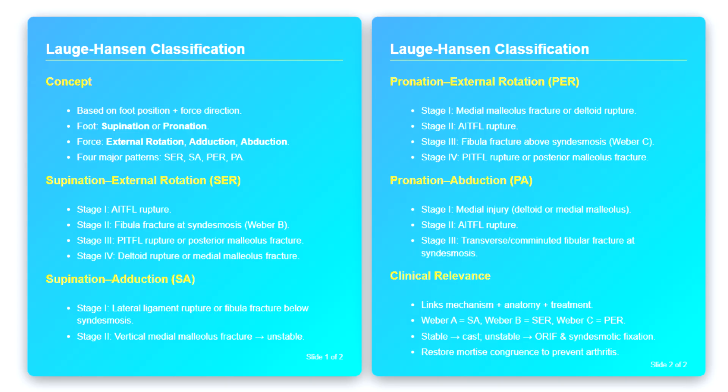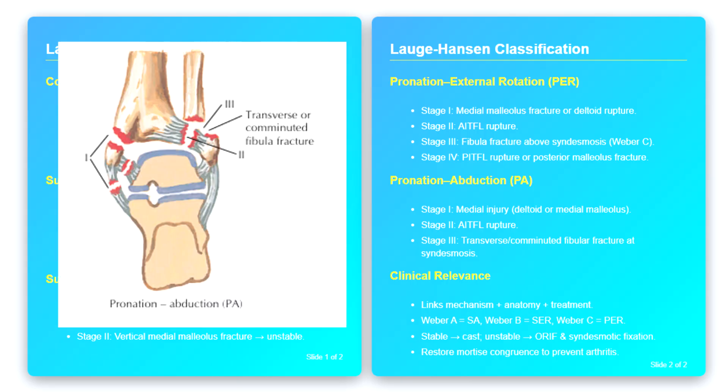Pronation abduction, PA. The fourth and final major pattern is pronation abduction. In this case, the foot is pronated and a strong abduction force acts laterally. In stage one, the medial side is injured first, either through deltoid ligament rupture or transverse fracture of the medial malleolus. In stage two, the syndesmosis is injured, including tearing of the anterior inferior tibiofibular ligament. In stage three, the fibula fractures transversely or comminutes, often at the level of the syndesmosis.